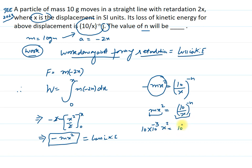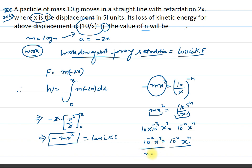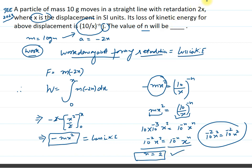After simplifying, x raised to power -n in the denominator can be written as x raised to power +n. So we get 10⁻² × x² = 10⁻ⁿ × x^n. Comparing both sides of the equation, we can easily say that n is equal to 2. If n = 2, the equation becomes 10⁻² × x² = 10⁻² × x², which confirms n = 2 is the answer for this problem. Thank you.